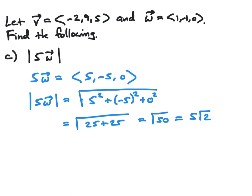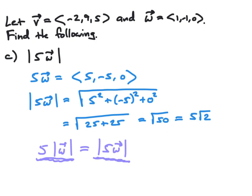We make this observation to compare with the answer from part B. Comparing parts B and C, we see that 5 times the magnitude of W equals the magnitude of 5W. This illustrates a common property of vectors: if we scale a vector by a positive scalar like 5, we can compute the magnitude either before or after the scaling, as long as we eventually scale the result by 5, and either way we obtain the same value.